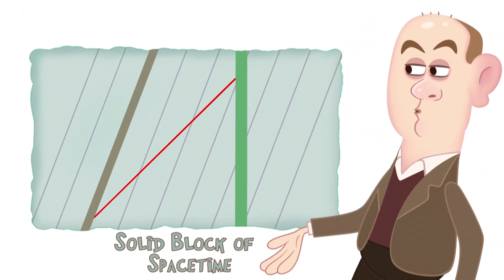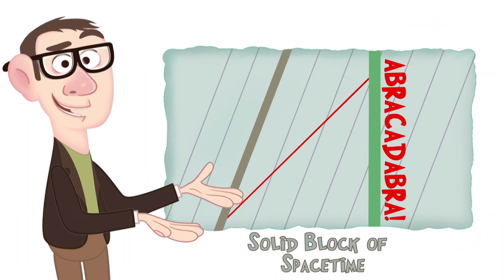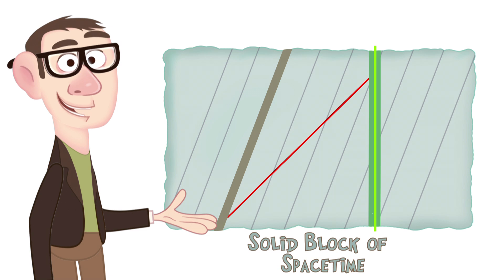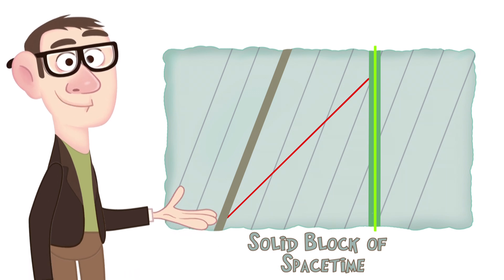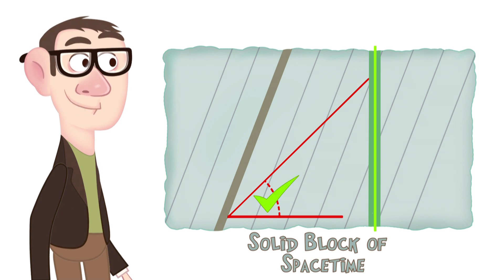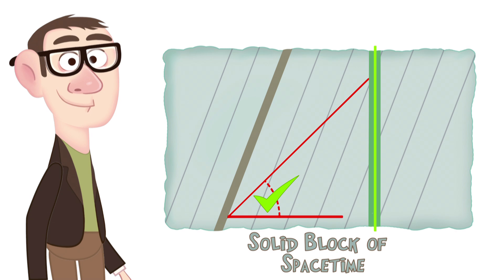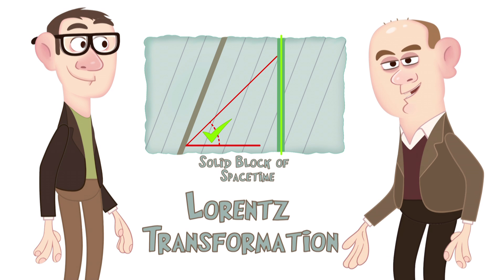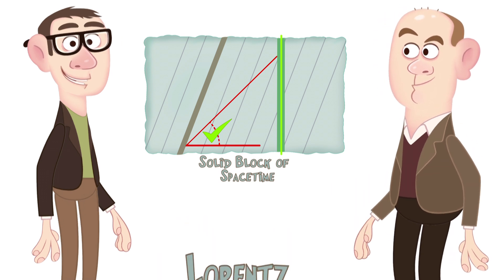And abracadabra, Tom's world line has gone vertical, so this does represent the world from his point of view. But most importantly, the light world line has never changed its angle, and so light will be measured by Tom going at the correct speed. This superb trick is known as a Lorentz transformation.